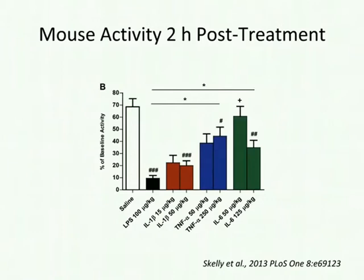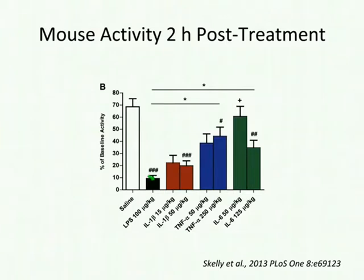Here are some studies that demonstrate sickness behavior in mice two hours post-treatment. Animals were treated with various agents and then placed in an activity chamber to measure total activity. Animals exposed to saline reached nearly baseline activity, but just two hours after an IP injection of LPS at 100 micrograms per kilogram, there was a very dramatic reduction in basal activity. Interleukin-1 at two different doses and TNF-alpha at two different doses showed similar but less dramatic effects, and IL-6 showed effects at a higher dose.